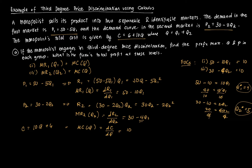We now need our prices, since they vary for each group. For group 1, substituting back into the demand function: P1 equals 50 minus 5 times 4, which is 50 minus 20, giving P1 equal to 30.